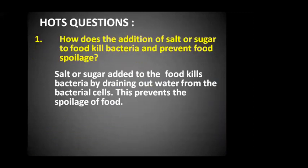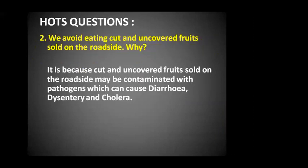Now let's discuss higher order thinking skill type questions. Question 1: how does the addition of salt or sugar to food kill bacteria and prevent food spoilage? Salt or sugar added to the food kills bacteria by draining out water from the bacterial cell, which prevents the spoilage of food. The second thought question: we avoid eating cut and uncovered foods sold on the roadside — why? Because cut and uncovered foods sold on the roadside may be contaminated with pathogens which can cause diarrhea, dysentery, and cholera.